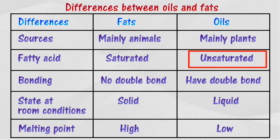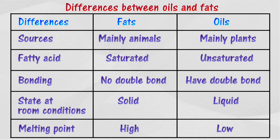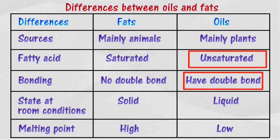Oils are produced from the reaction between unsaturated fatty acids and glycerol. Unsaturated fatty acids contain double covalent bonds between two carbon atoms.